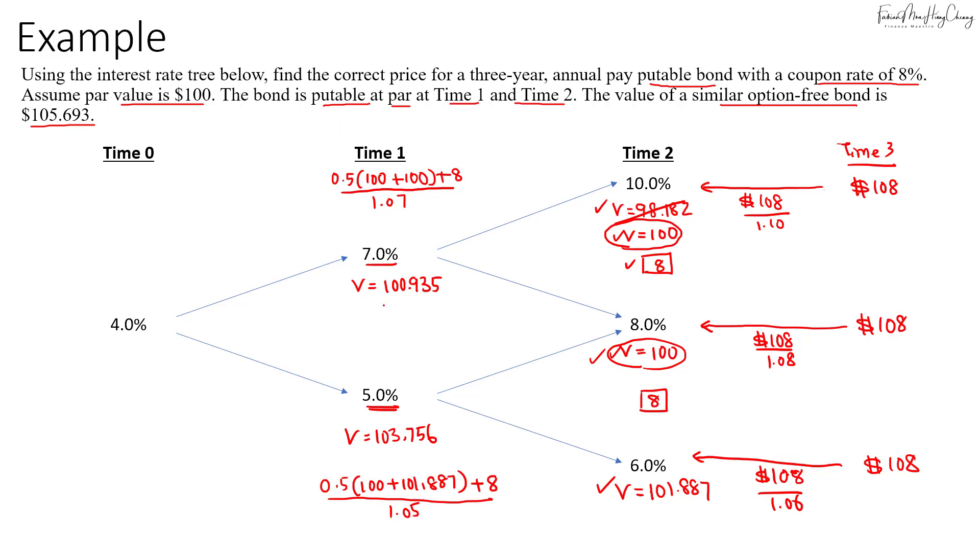None of this is below 100, which is the par value, so we cannot exercise the put option. We'll just continue to discount this back to Time 0 using 4%. The value here will be based on 0.5 times 100.935 plus 103.756, then add in the coupon $8, and discount it at 4%. That gives us $106.101. This is the value of the putable bond at Time 0.